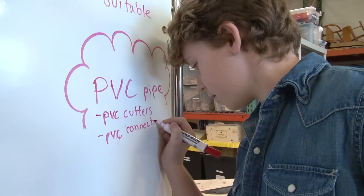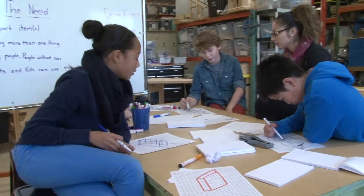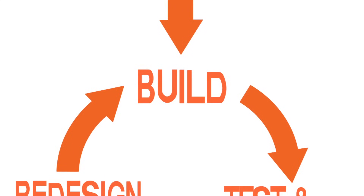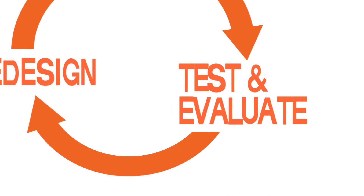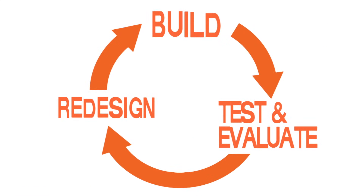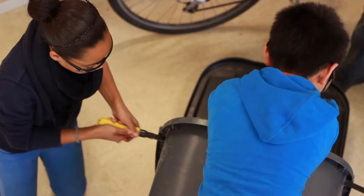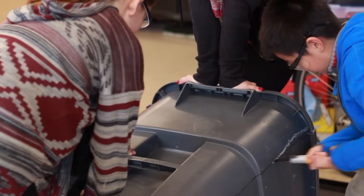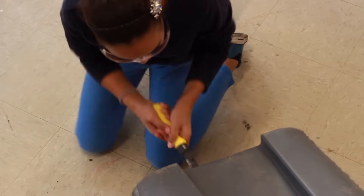The next step in the design process is actually three steps that cycle around and may be repeated: build, test, and evaluate and redesign. We decided to work on the repurposed trash can idea first.